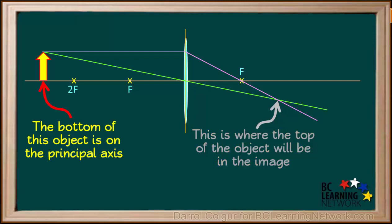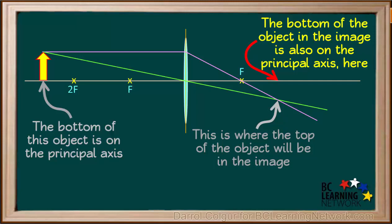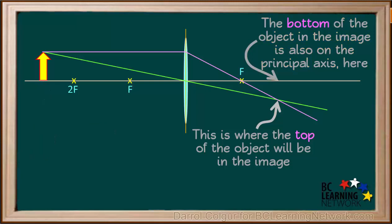Because the bottom of our object was sitting on the principal axis, the bottom of the object in the image is also on the principal axis here. So knowing where the bottom and the top of our image will be, we can draw the image.